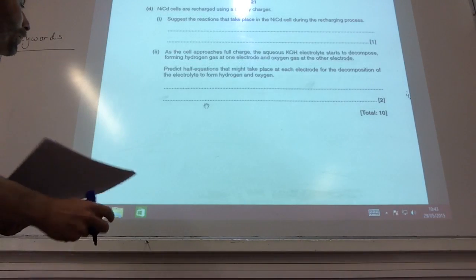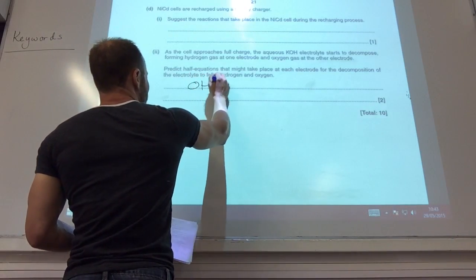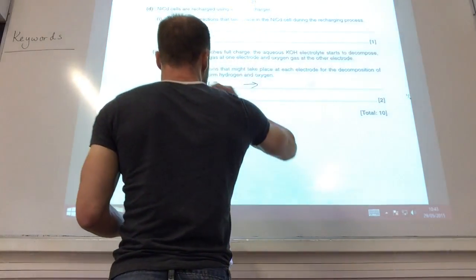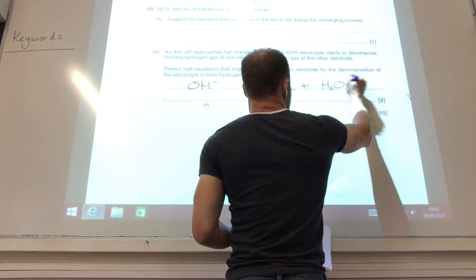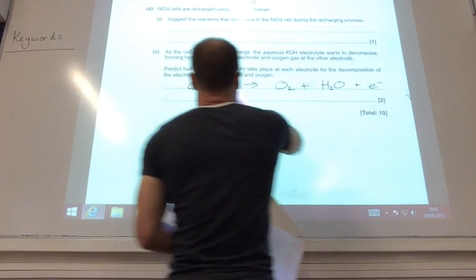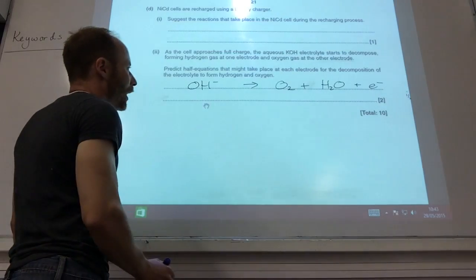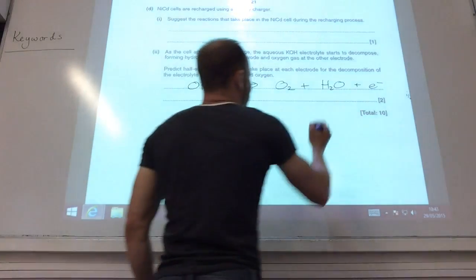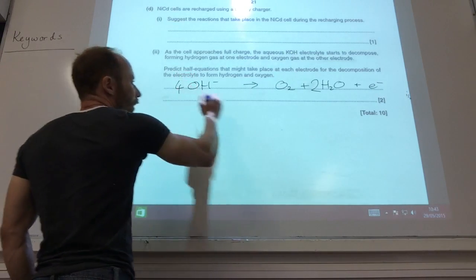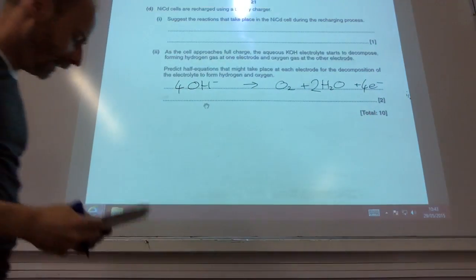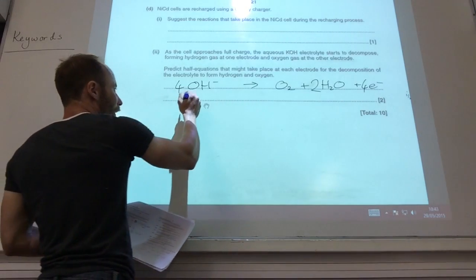I now need to predict the equations that are going to happen. So the first one, I've got hydroxide ions decomposing to form oxygen gas. And I'm also going to have some electrons here because this is negative. Just to get this to balance out nicely, if I put two waters there and I've got four hydroxide there, then I can have four electrons there and that all works out nicely.